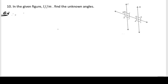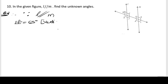Since line l is parallel to m, that is our given information. One angle is given as 65 degrees. We can write angle F is equal to 65 degrees, and the reason here is vertically opposite angles — vertically opposite angles are equal. In front of F we have 65, so F equals 65.